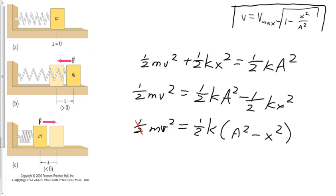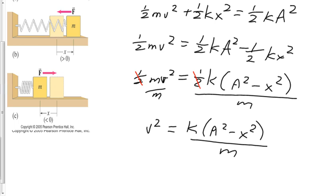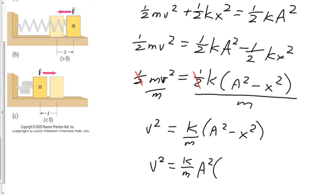We can cancel the ½ from each side, then divide each side by m. So I'm going to rewrite that: v² equals k times (A² minus x²) over m, or equivalently k/m times (A² minus x²). Now I want to factor out A², which will become useful shortly. So v² equals k/m times A² times (1 minus x²/A²). If you multiply A² back through, you get the same expression as before.